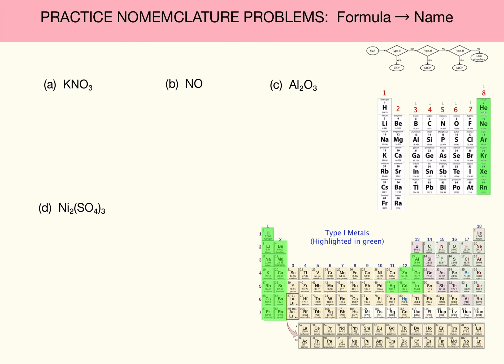Let's now work a few formula to name problems. Before I get into those, I want to remind you that there's at least three things you want to know when you go to work a nomenclature problem. One, you want to remember your basic strategies, your basic protocols. You want to be able to know how to determine the charge on nonmetals, and you want to make sure you can identify type 1 from type 2 metals.